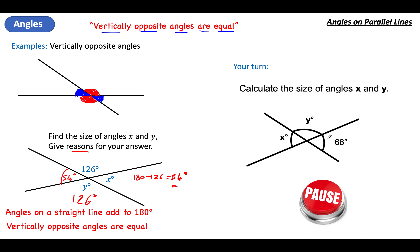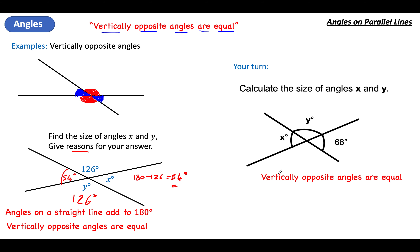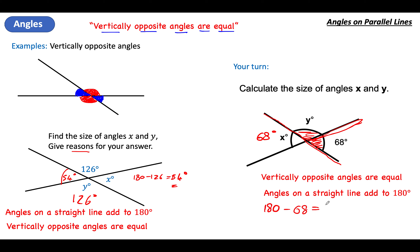There's one for you to do — find x and give a reason, then find y and give a reason. Please pause the video and write it down. So x is vertically opposite 68, so vertically opposite angles are equal and x equals 68 degrees. Then for y, thinking about the straight line: 180 take away 68 gives 112 degrees — angles on a straight line.